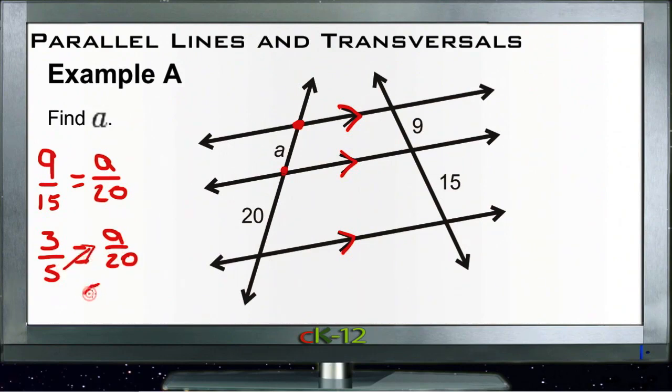5 times a is 5a and 3 times 20 is 60. So we divide both sides by 5 and we get little letter a equals 12.